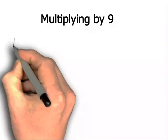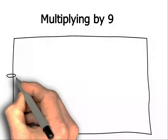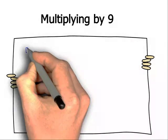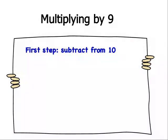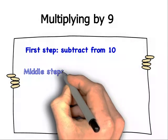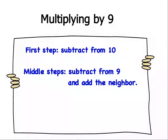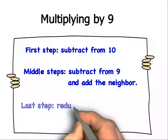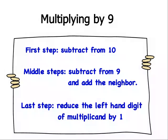Multiplying by 9. The rules for multiplying by 9 are: 1. First step, subtract from 10. 2. Middle steps, subtract from 9 and add the neighbor. 3. Last step, reduce the left hand digit of the multiplicand by 1.